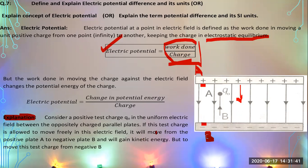When the charge particle moves freely from positive plate A to negative plate B, it gains kinetic energy. But to move the test charge from B back to A, you have to do work against the repulsive force provided by the positive plate. The concept of electric potential is the amount of work done on a unit positive charge.